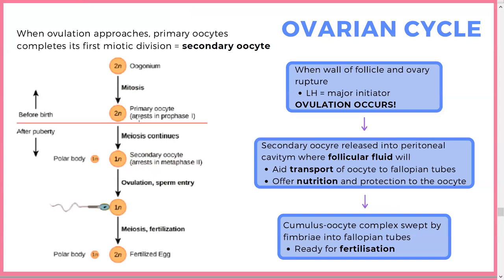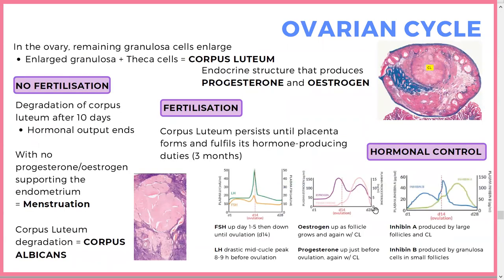Meiosis finally continues. When the follicle wall ruptures — driven by an LH surge — ovulation occurs and the secondary oocyte is released into the peritoneal cavity. The follicular fluid helps transport and nourish it, and then the fimbriae of the fallopian tubes take it to where it needs to be, ready for fertilization.